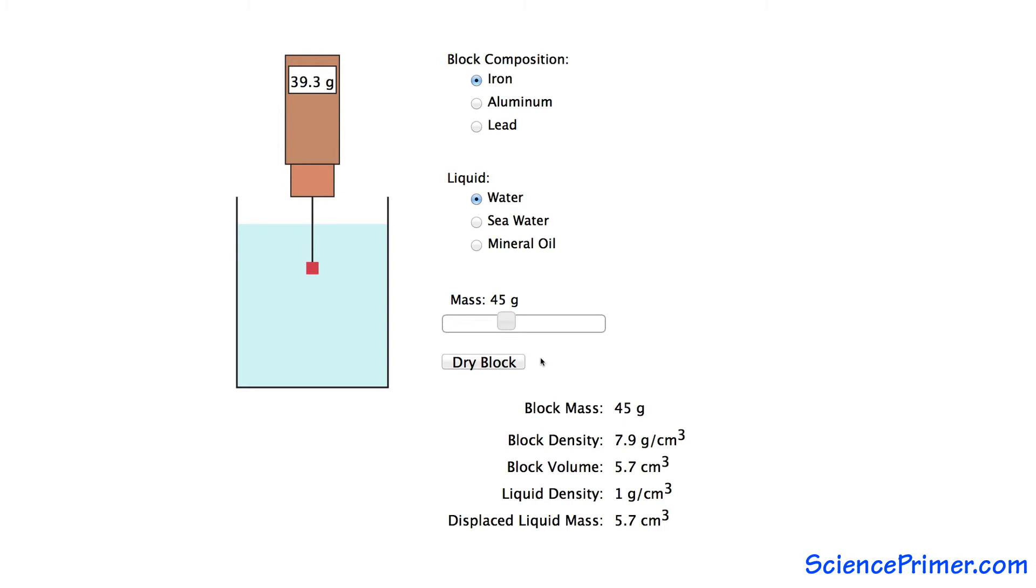Notice that the block's apparent mass is reduced by the mass of the water the submerged block displaces. This leads to the observation that the more water an object displaces, the greater the buoyancy force, and the lower the apparent mass of the object will be.